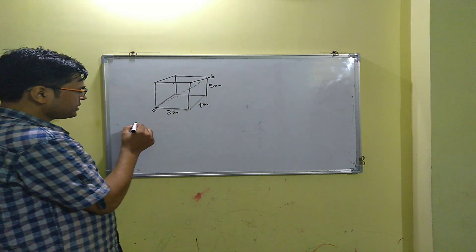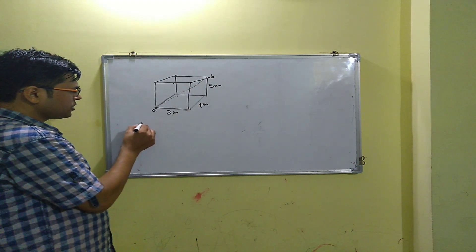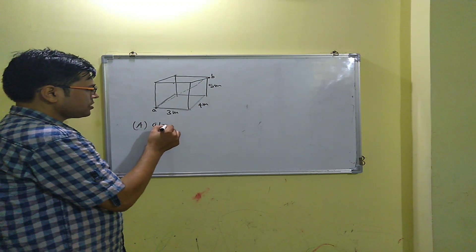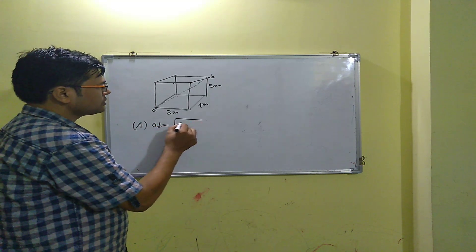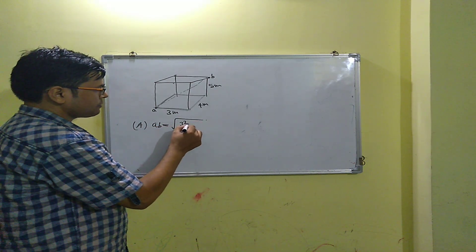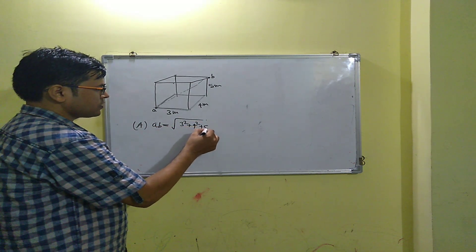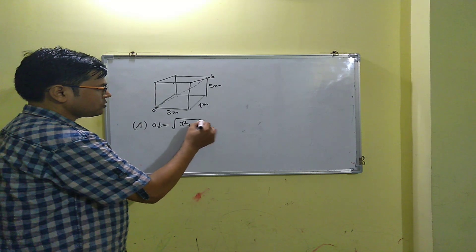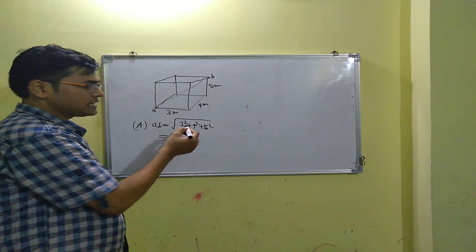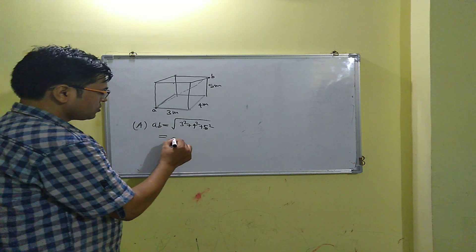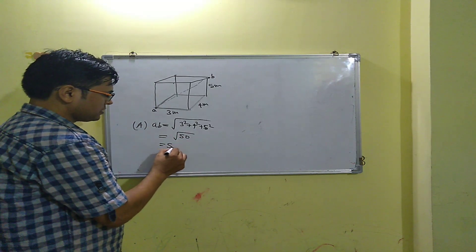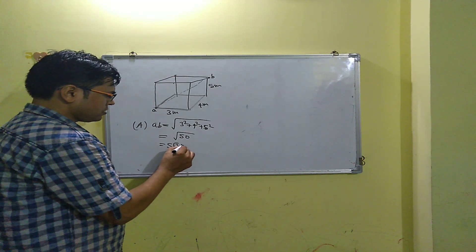So AB equals root of (3 squared + 4 squared + 5 squared), using the general formula for the diagonal of a cuboid: root of (L squared + B squared + H squared). This comes to root 50, which is 5 root 2 meters. So the flying part is straightforward.